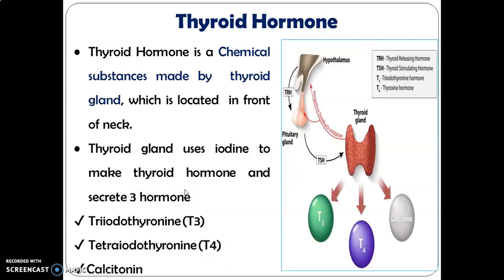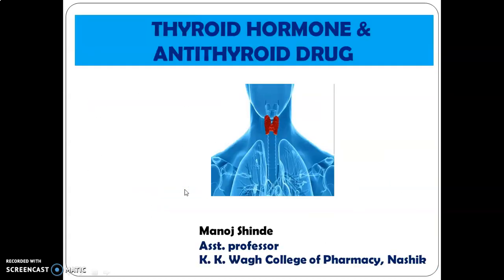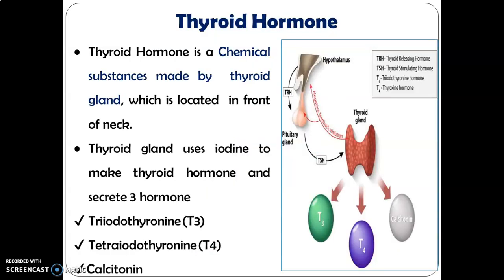Hello friends, welcome to this session. In this session we are going to learn about thyroid hormone and antithyroid drugs. Thyroid hormones are chemical substances made by the thyroid gland, which is located in the front of the neck. It uses iodine to make thyroid hormones and secretes three hormones.